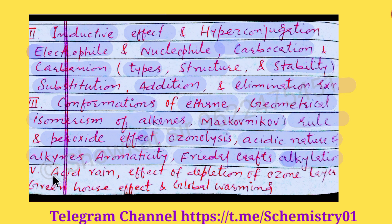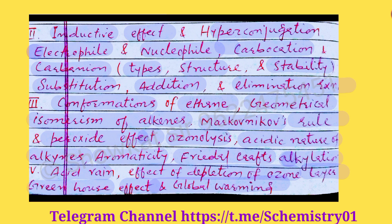The next chapter is Environmental Chemistry. Here you will study acid rain, the effect of depletion of the ozone layer, and the greenhouse effect and global warming. I hope that you will prepare all these questions because these are the most important questions. If there is any doubt or confusion, you can comment in the comment section below, and if you liked this video, please share it with others. Thank you.